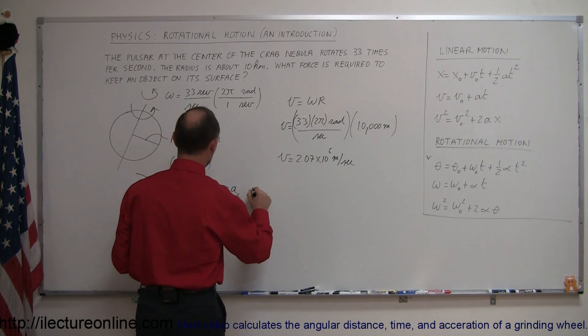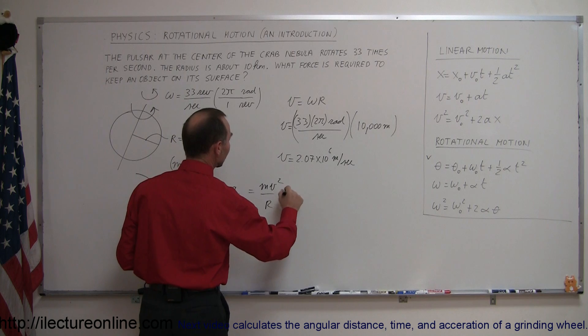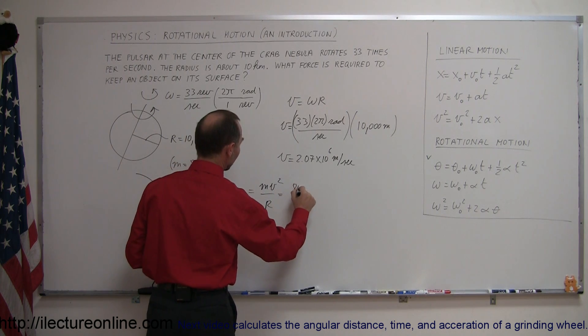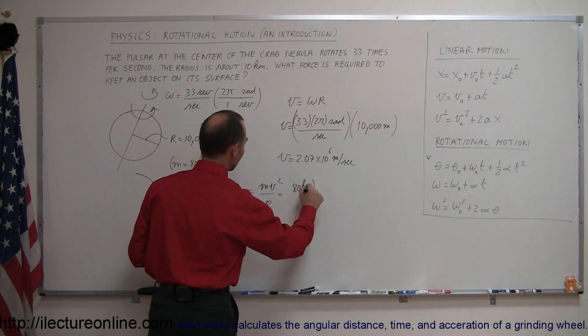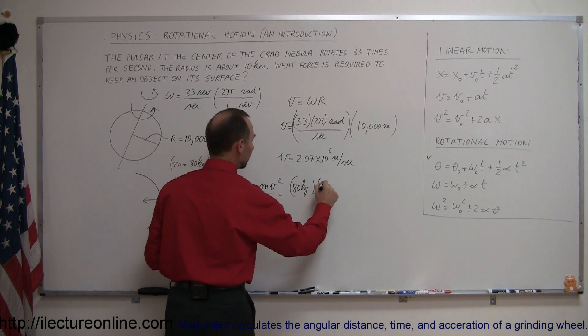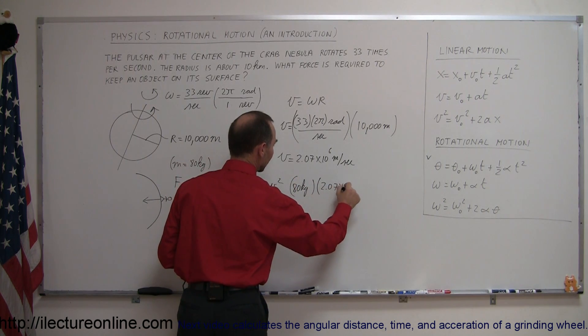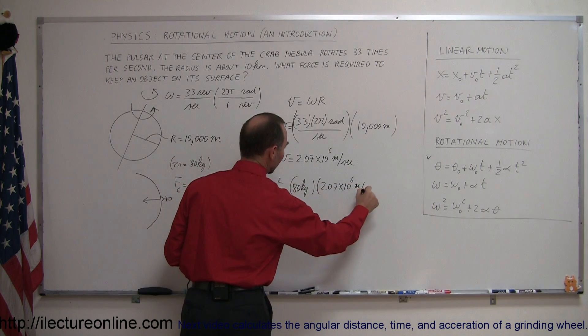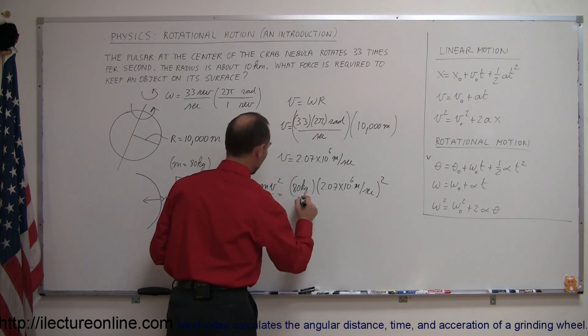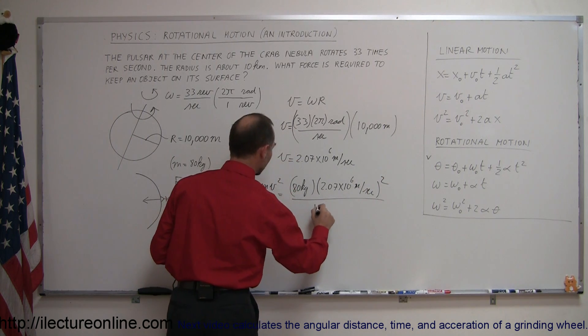So we're now going to say that is equal to m times v squared over r, which is equal to the mass. We took a typical person of 80 kilograms times the velocity squared, that would be 2.07 times 10 to the sixth meters per second. We square that, and we divide the whole thing by the radius, which was 10,000 meters.